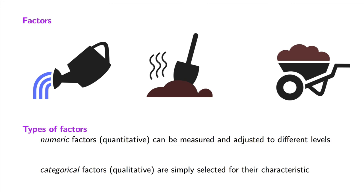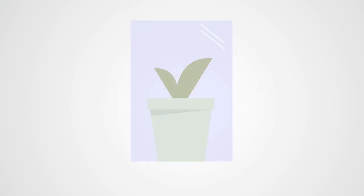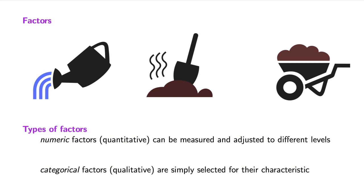A key point about numeric factors is that we're able to select and adjust their numeric level. We also have categorical factors. These are factors that take on a limited number of values and are usually not quantified numerically. For example, we could use soil type A or soil type B. We could put a bag over the plants to create a greenhouse effect or leave the plants exposed. The factors in your experiment can be either numeric or categorical, and most experiments will use both types.